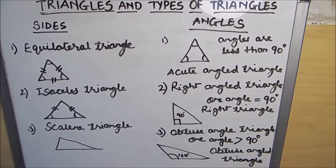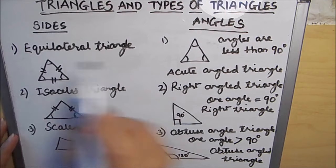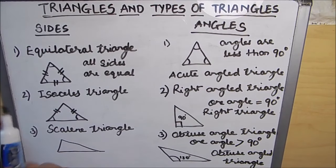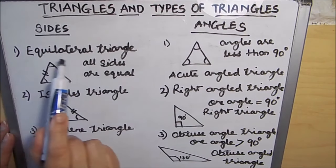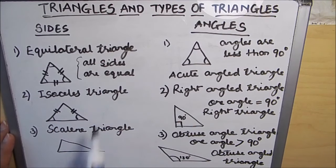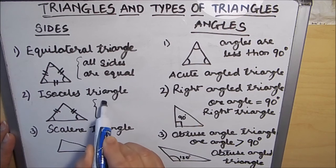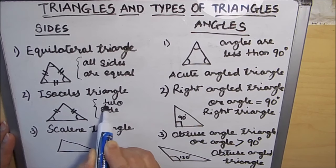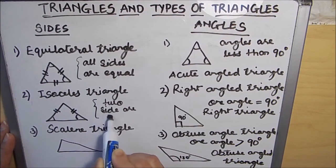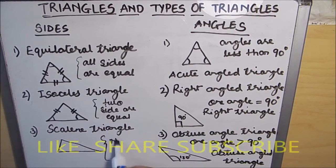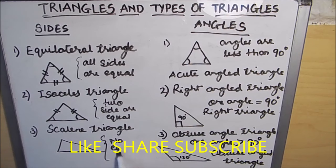So here we have classified triangles according to their sides and according to their angles. According to the sides, we have the equilateral triangle in which all sides are equal, the isosceles triangle in which two sides are equal, and the scalene triangle in which there are no equal sides.